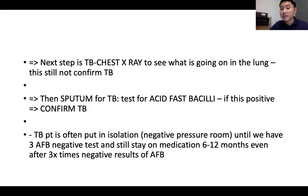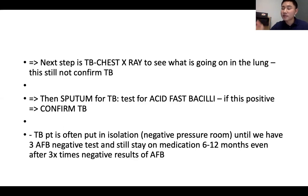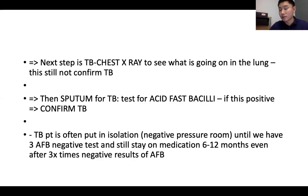After a positive TB skin test, the patient gets a chest X-ray — but this is still not confirmatory. The confirmatory test is a sputum test for acid-fast bacilli. If the sputum is positive for acid-fast bacilli, TB is confirmed. Patients with TB are placed in a negative pressure isolation room until they have three consecutive negative acid-fast bacilli tests. Even after leaving isolation, they must continue medication for 6 to 12 months.